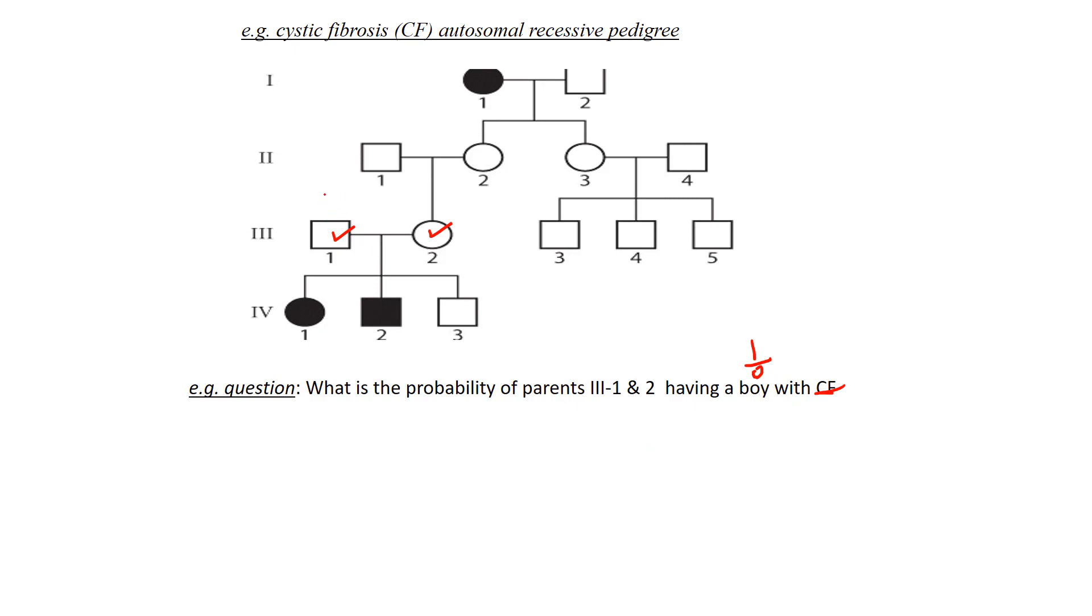We have to determine the genotypes, which we've done in the previous question, but we know that both parents must be heterozygous. They both have the big C because they're not affected, but they had kids that were affected, so they must be heterozygous. And again, if you're heterozygous and you don't have the disease or the trait, it's got to be recessive.